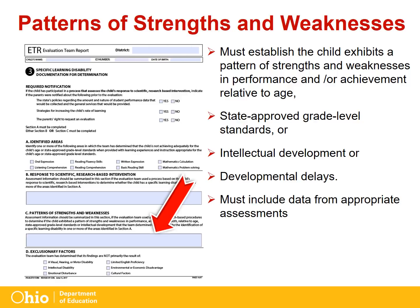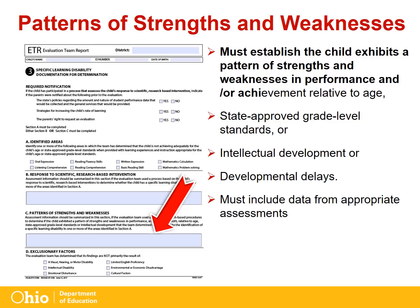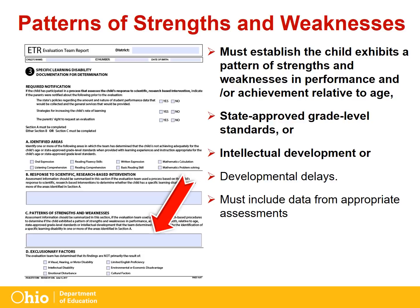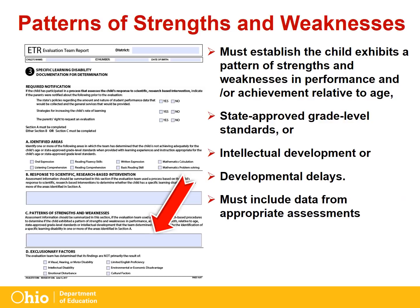The use of Part 3C Patterns of Strengths and Weaknesses requires prior approval granted by the Ohio Department of Education. The district must have a board-adopted procedure for determining SLD. This method must establish that the child exhibits a pattern of strengths and weaknesses in performance and/or achievement relative to age, state-approved grade-level standards, or intellectual development, or developmental delays for preschool children. The procedures used must be relevant to the identification of a specific learning disability and must include data from appropriate assessments.